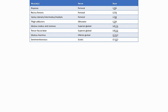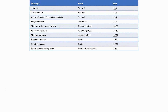For the hamstrings: the semimembranosus is supplied by the sciatic nerve, L5, S1, and S2, primarily S1. Semitendinosis is also supplied by the sciatic nerve, L5, S1, and S2, primarily L5. Biceps femoris long head is supplied by the tibial division of the sciatic nerve, L5, S1, and S2, primarily S1. Biceps femoris short head is the fibular division of the sciatic nerve, supplied by L5, S1, and S2, primarily S1.